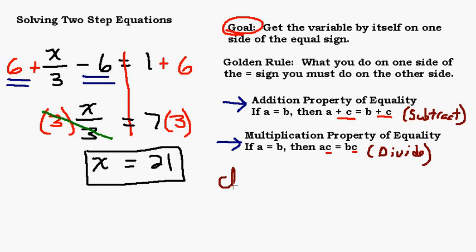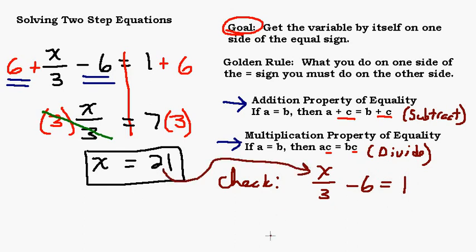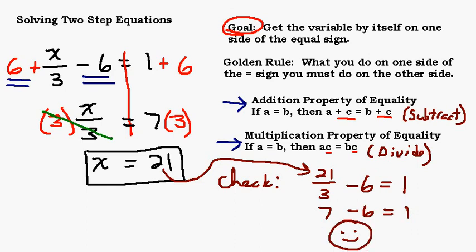Let's check it. Original equation: X over 3 minus 6 equals 1. I got 21 for my X value, so I'll replace X with 21. 21 divided by 3 is 7, take away 6 equals 1 — yes it does! I have the correct answer.